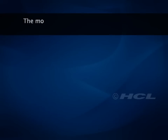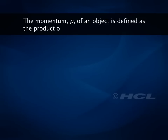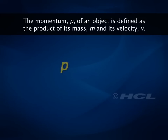The momentum, p, of an object is defined as the product of its mass, m, and its velocity, v. That is, p equals mass multiplied by velocity.